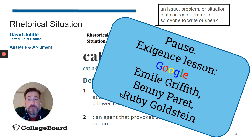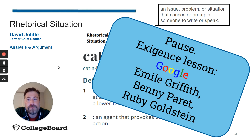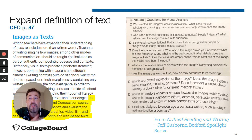I want you to pause again and search — Google, Bing, whatever search engine you prefer — these three names: Emile Griffith, Benny Perrette, and Ruby Goldstein. Just collect what you discover about these men and how that begins to inform the passage that you read. If you're like my students — I usually do this as a homework assignment — they come in the next day and just start talking. There are so many things they learned that are outside of the passage. I tell them that all feeds into the exigence, because Norman Mailer knows some of that. Some of it happens later, but our understanding of the passage has changed.